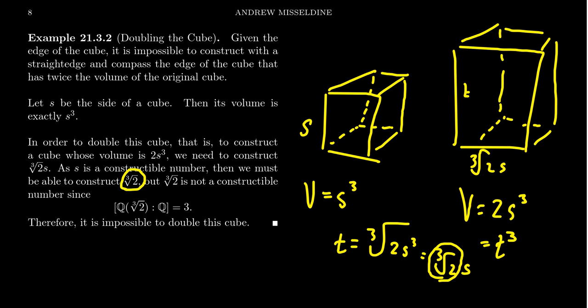If you take Q adjoin the cube root of 2, this is a field. If you look at the degree of the extension over Q, this is going to be 3 because its minimum polynomial is x³ - 2.